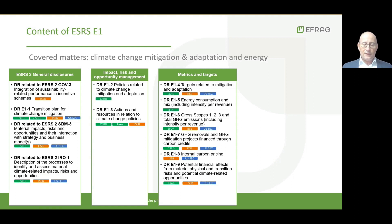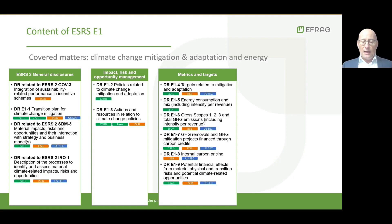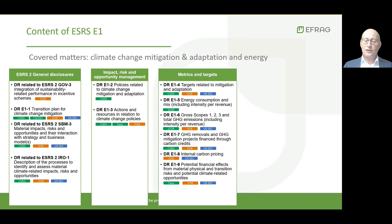When disclosing any greenhouse gas emission reduction targets, undertakings are required to describe the expected decarbonization levers, excluding removals and carbon credits, as well as the overall quantitative contributions of these decarbonization levers to achieve the said targets. Energy consumption and its split between non-renewable and renewable resources are required metrics, as well as greenhouse gas emissions, including scope 3 greenhouse gas emissions from material greenhouse gas protocol categories.